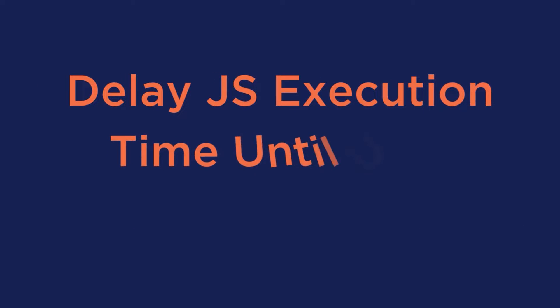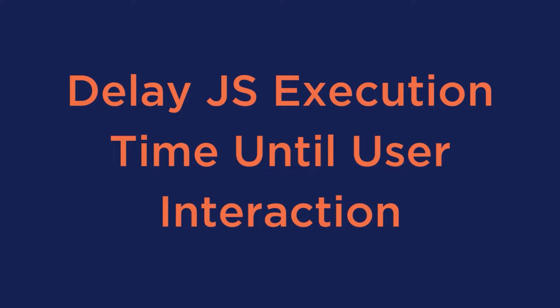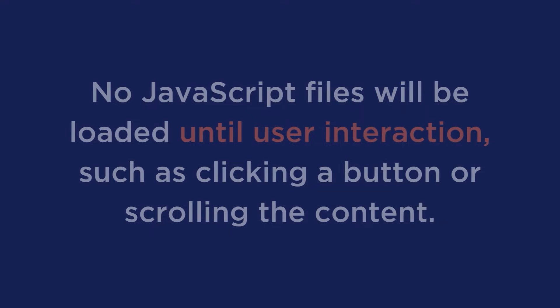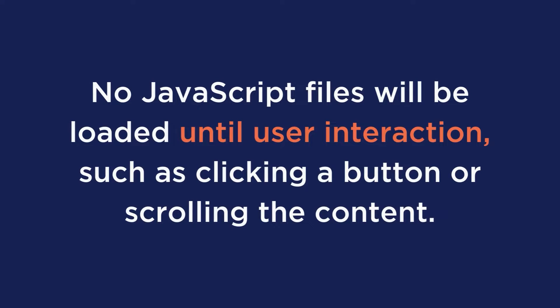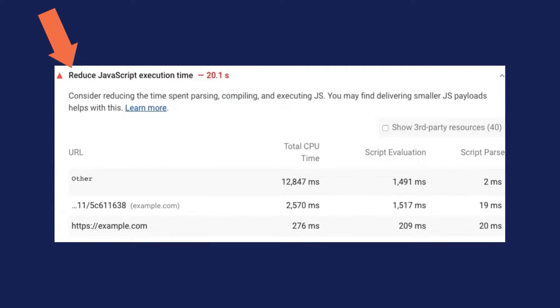Next is to delay JS execution time until user interaction. You can optimize JavaScript resources and prioritize the scripts needed for interaction by delaying the JavaScript files and their execution time until user interaction. In other words, no JavaScript files will be loaded until user interaction such as clicking a button or scrolling through content. You should delay all the JavaScript files that affect loading time and interaction for no reason, such as the unused JS files mentioned in the previous section. By doing this, you'll address the reduced JavaScript execution time in the PageSpeed Insights recommendations.